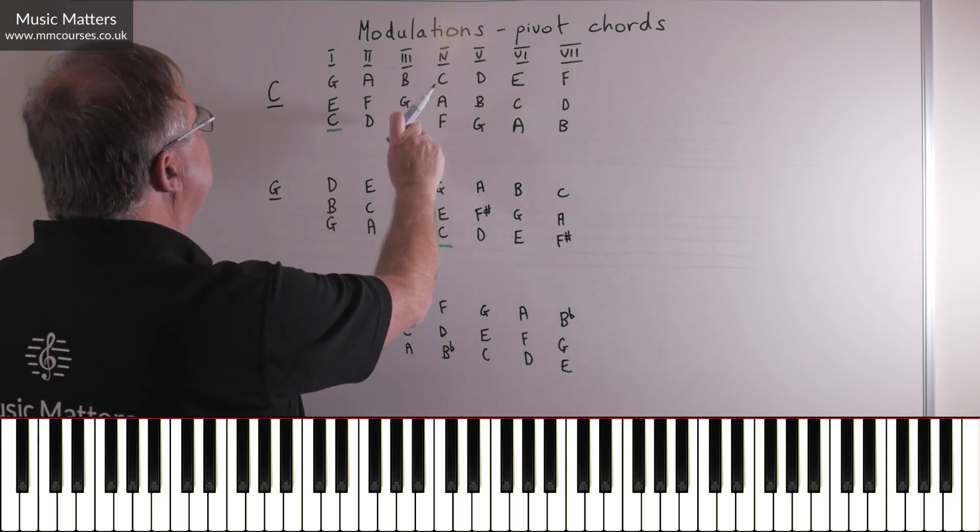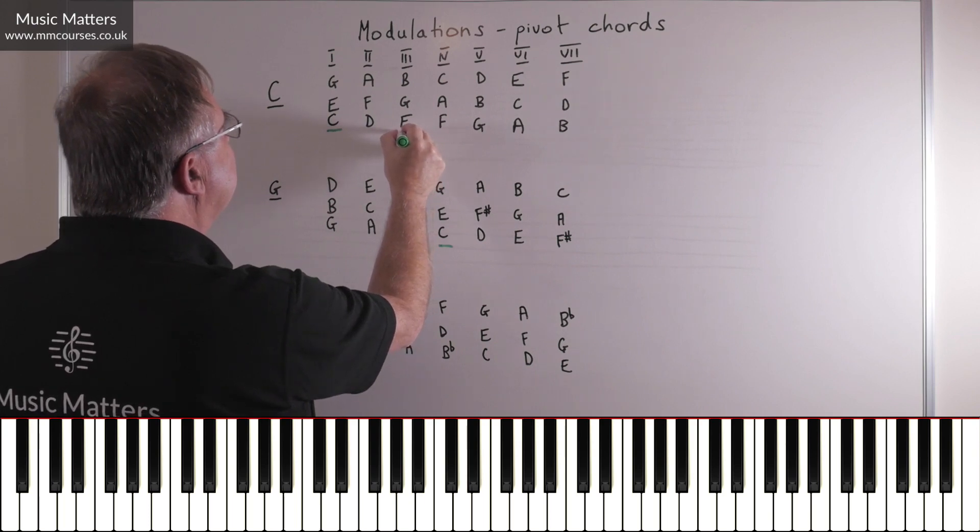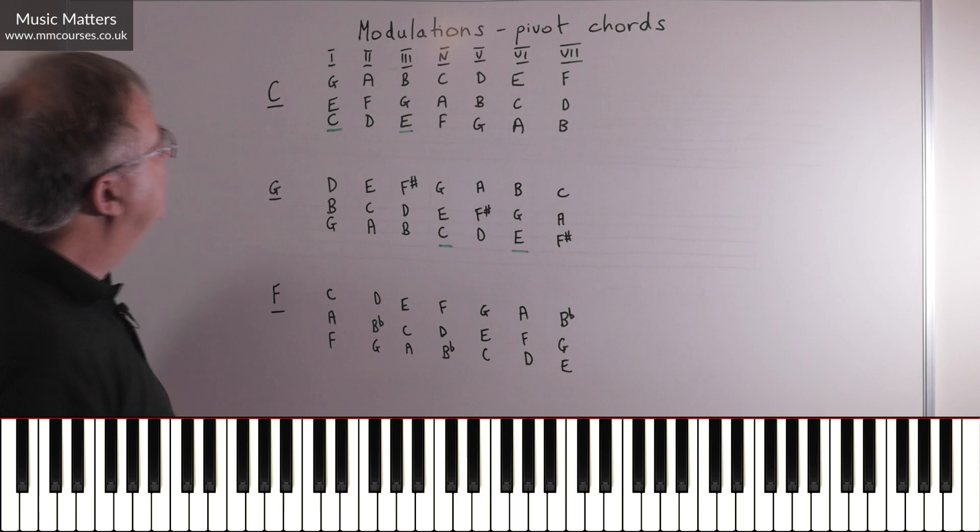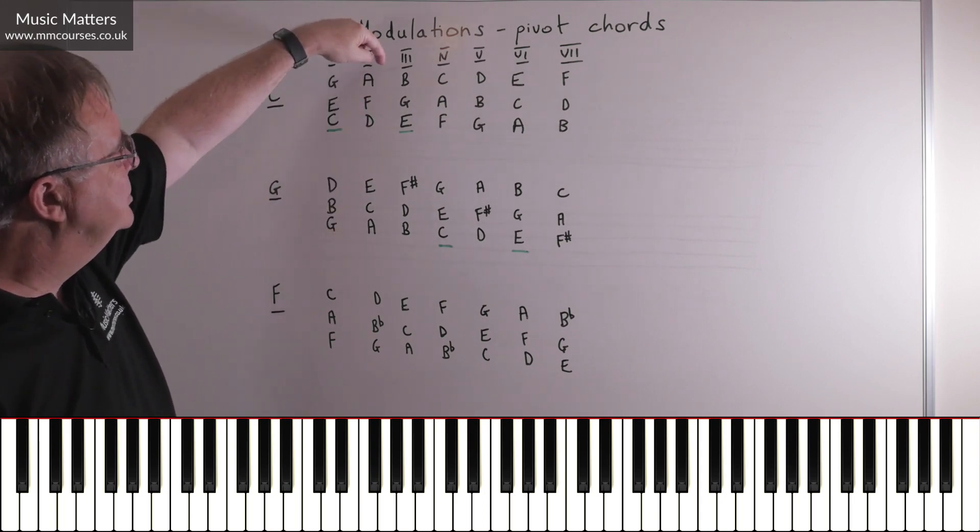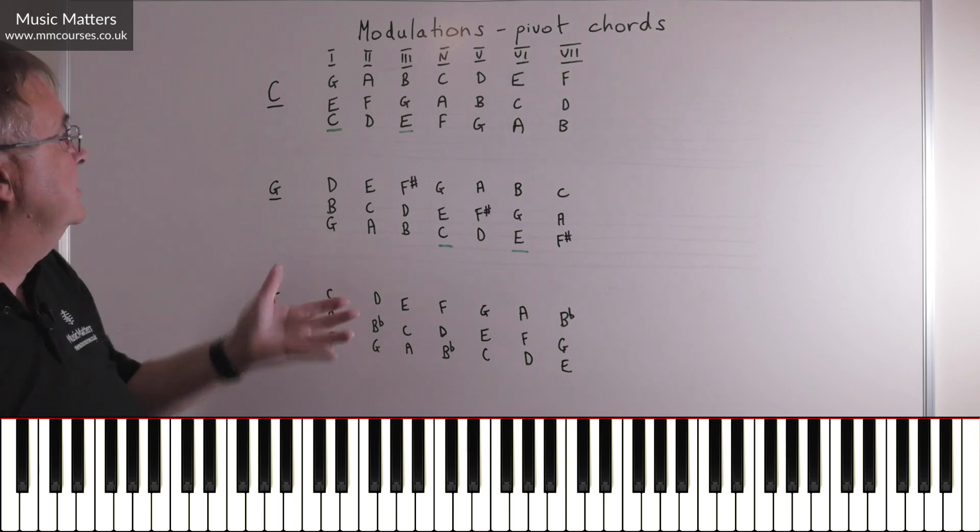What about chord III in C major, E, G, B? Well actually, do you know what? If we see that chord there, we also see it here. So what's chord III in C major is chord VI in G major, so that's a pivot chord.